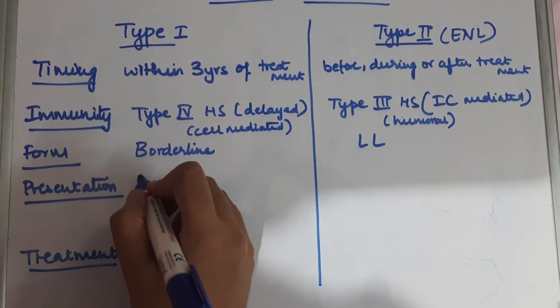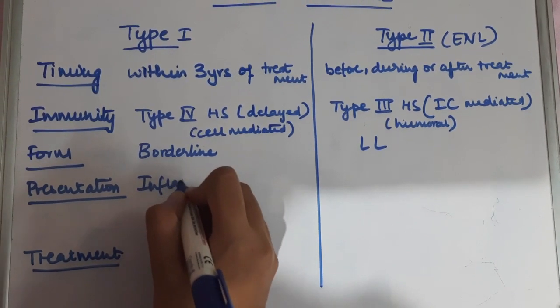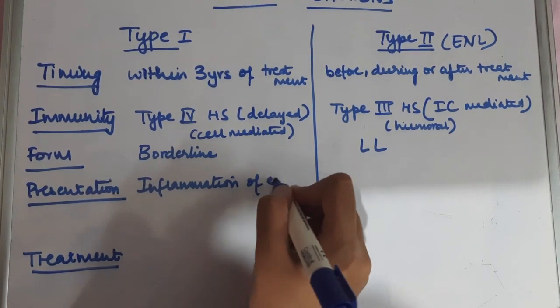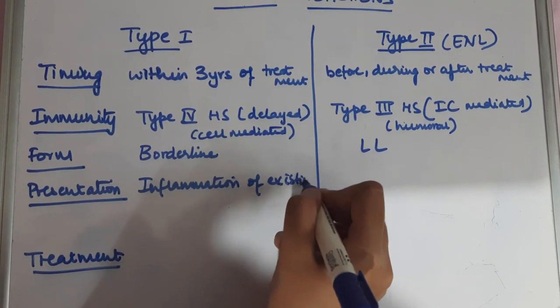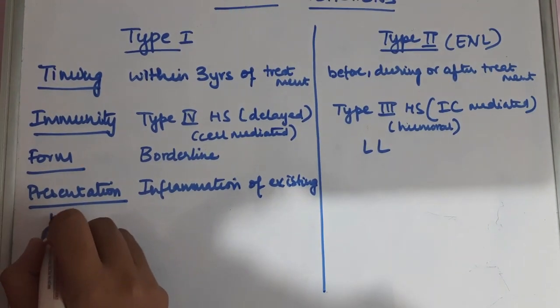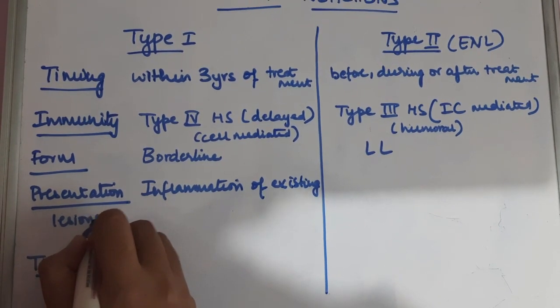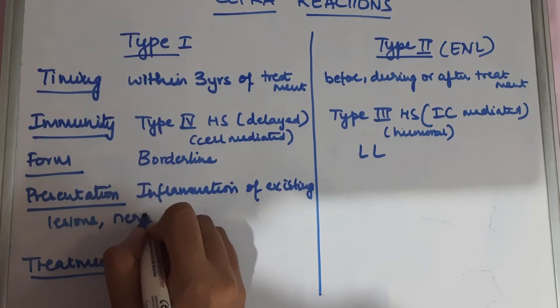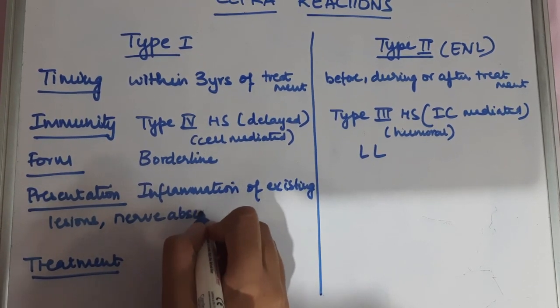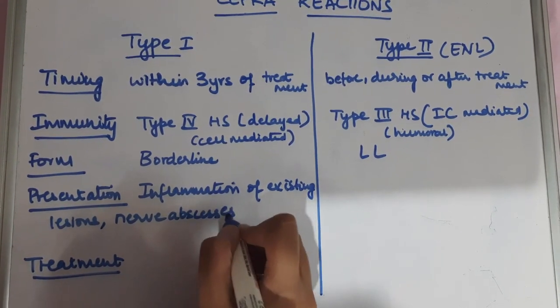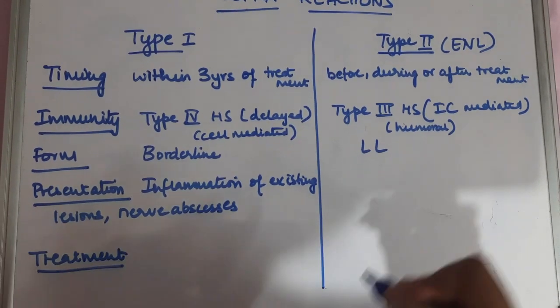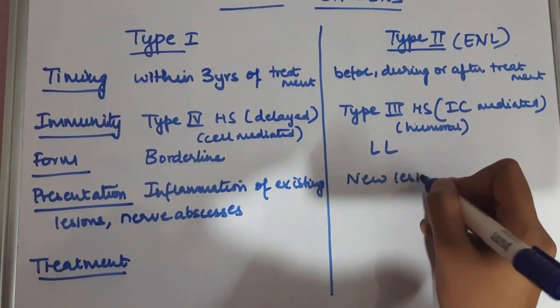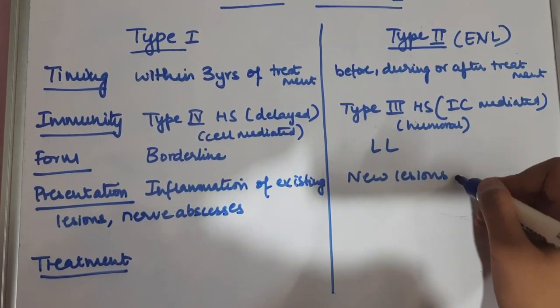In type 1 lepra reactions, there will be an inflammation of the pre-existing lesions, which means that the lesions that are already present in the body of the person undergo further changes and inflammation. Along with that, patients with type 1 lepra reactions also present with nerve abscesses. Patients with a type 2 lepra reaction will present with new lesions which arise newly, and along with that there will be systemic manifestations present.